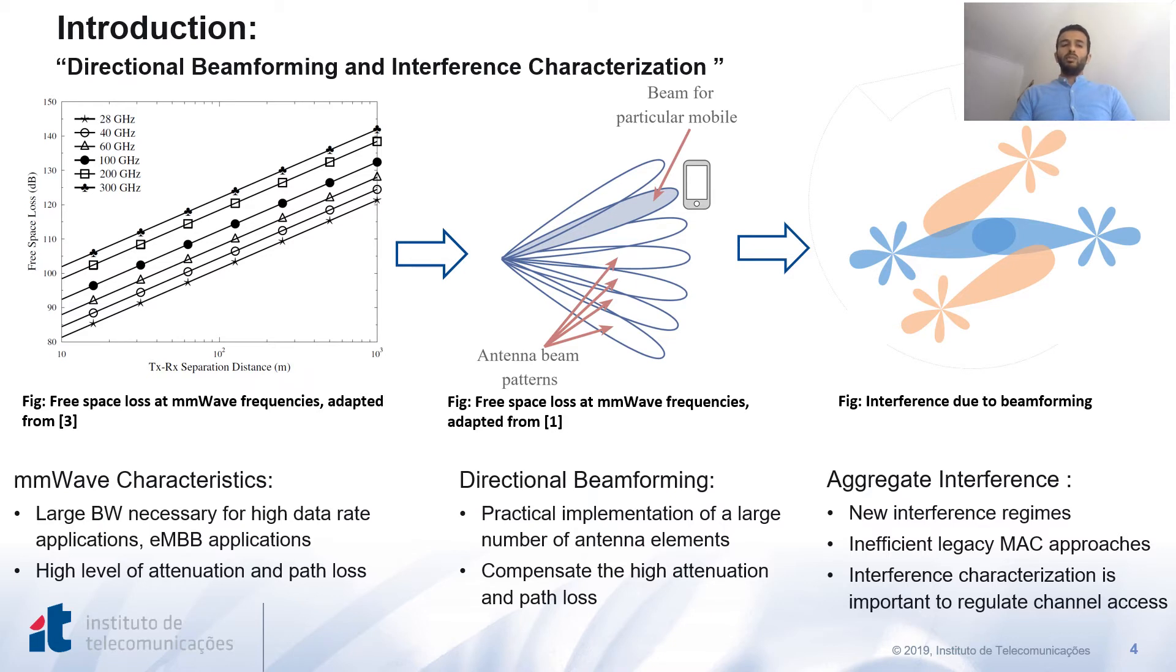Adopting beamforming at millimeter wave will introduce new interference regimes, since the radiative powers of the nodes are focused toward specific directions compared to isotropic antennas. As a result, the legacy MAC approach designed based on conventional interference regimes will be inefficient and has to be redesigned considering the new interference characteristics. This has motivated us to study the behavior of interference in directional beamforming networks.